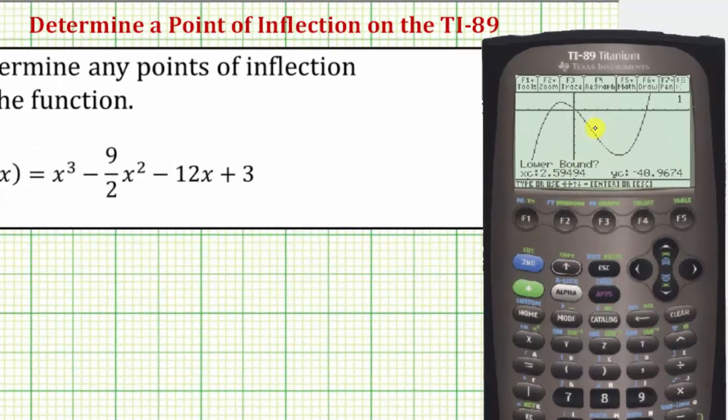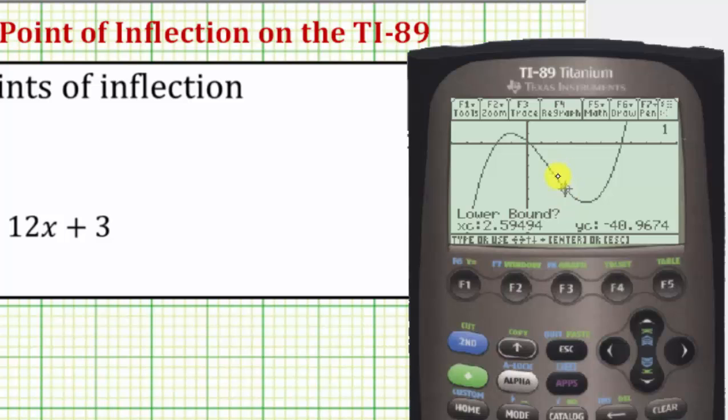It's asking for the lower bound, which means we place the cursor to the left of where the point of inflection would be. The point of inflection looks like it's approximately here, so let's move to the left of this point along the function, let's say here. Press enter.